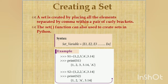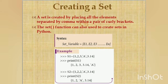This feature is used for membership testing and eliminating duplicate elements. By using sets you can easily test membership and eliminate duplicate elements. A set is created by placing all the elements separated by comma within a pair of curly brackets. In lists we use square brackets, in tuples we use parentheses, but in sets we use curly braces.